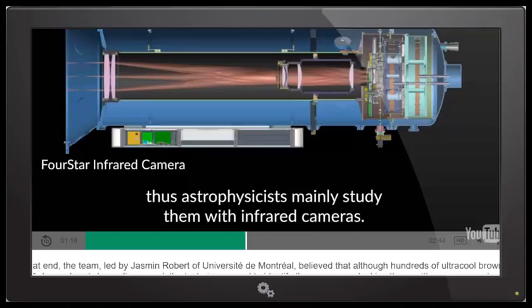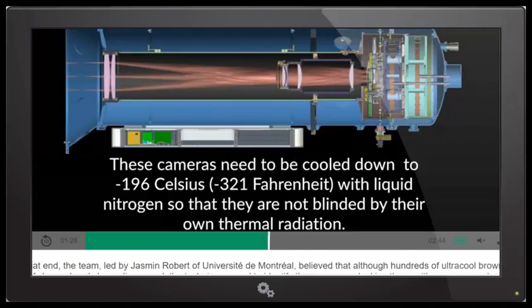Let's move on a little bit in this video. This is just showing some of the technology, the infrared technology used to examine and see these cameras, or excuse me, see these brown dwarfs with these cameras. Now, right here, it's telling you that these cameras need to be cooled down to minus 196 degrees Celsius minus 321 degrees Fahrenheit with liquid nitrogen so that they are not blinded by their own thermal radiation. Pretty sophisticated stuff.